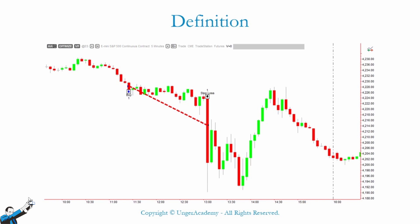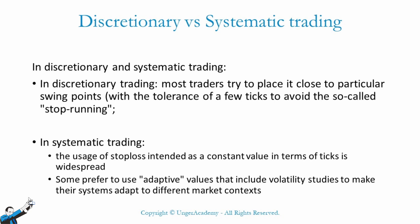Let's now see how this tool is used in discretionary trading and systematic trading. Generally speaking, discretionary traders tend to use significant levels of the market, such as the recent high, the recent low, and other key swing levels. They may then add a certain number of ticks of deviation to such levels in order to avoid the so-called Stop Running phenomenon. However, it is very difficult to use this kind of approach in systematic trading.